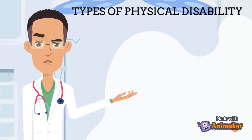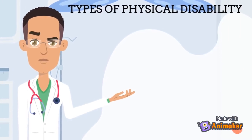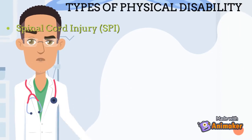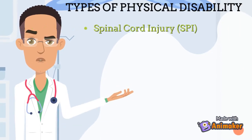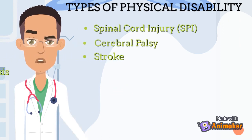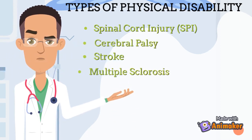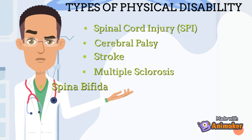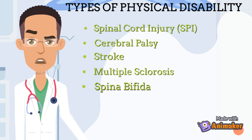Types of physical disability: spinal cord injury or SCI, cerebral palsy, stroke, multiple sclerosis, spina bifida, and muscular dystrophy.